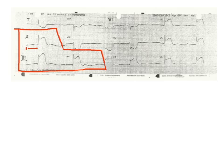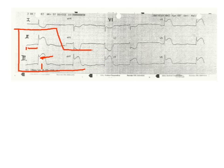We expect bradycardia with an inferior wall MI because the SA and AV nodes take a hit there, so that is not unexpected. What else can we see? We can certainly appreciate what's known as ST elevation. If you look at where the J-point should come back to the baseline, it's clearly not, and you can see the T-wave has merged into the QRS complex. There is significant ST elevation, so it is very safe to say this person is definitely having a STEMI of the inferior wall.